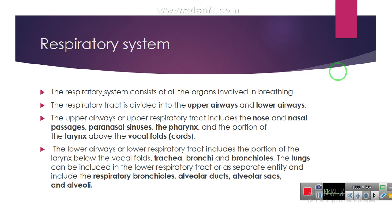The respiratory tract is divided into upper airways and lower airways. The upper respiratory tract includes the nose, nasal passages, paranasal sinuses, the pharynx, and the portion of the larynx above the vocal cords. The lower respiratory system consists of the portion of the larynx below the vocal cords, the trachea, bronchi, bronchioles, and the lungs, which can be included in the lower respiratory tract or treated as a separate entity including the respiratory bronchioles, alveolar ducts, alveolar sacs, and the alveoli.